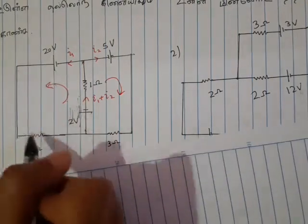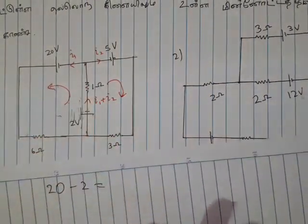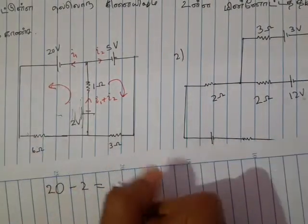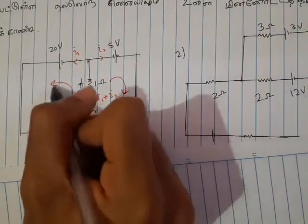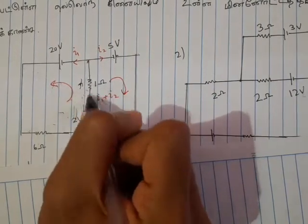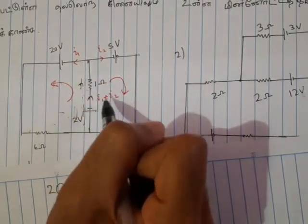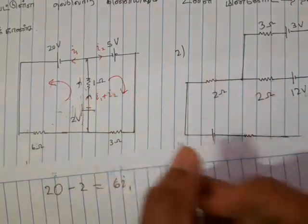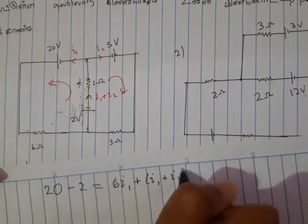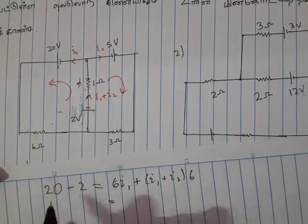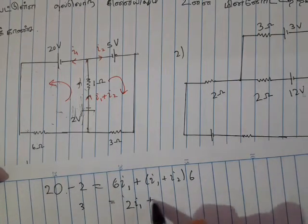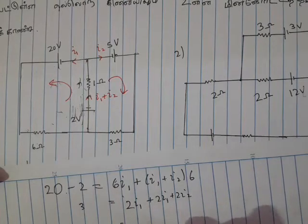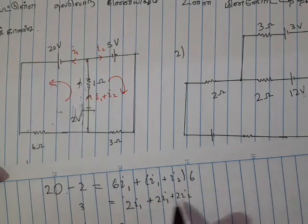The current will come. This is how it comes. So I will say plus I into R. R is I1. Now the current will come. How can I come? The current will come. I1 plus I2 into R.